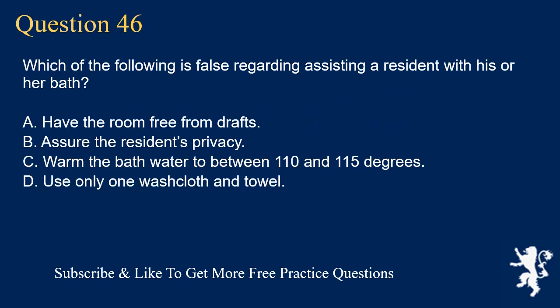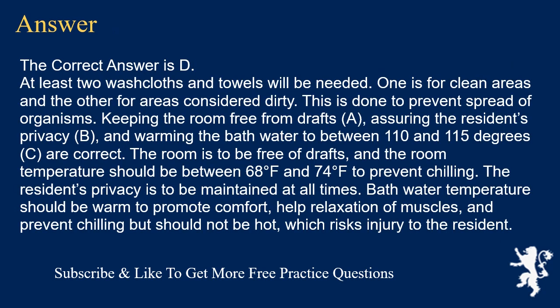Question 46. Which of the following is false regarding assisting a resident with his or her bath? A. Have the room free from drafts. B. Assure the resident's privacy. C. Warm the bathwater to between 110 and 115 degrees. D. Use only one washcloth and towel. The correct answer is D. At least two washcloths and towels will be needed — one for clean areas and the other for areas considered dirty — to prevent spread of organisms. Keeping the room free from drafts, assuring the resident's privacy, and warming the bathwater to between 110 and 115 degrees are all correct. Room temperature should be between 68°F and 74°F to prevent chilling, and privacy is to be maintained at all times.